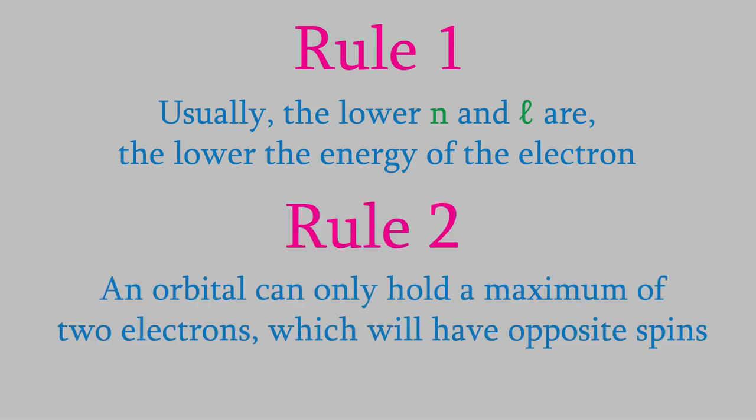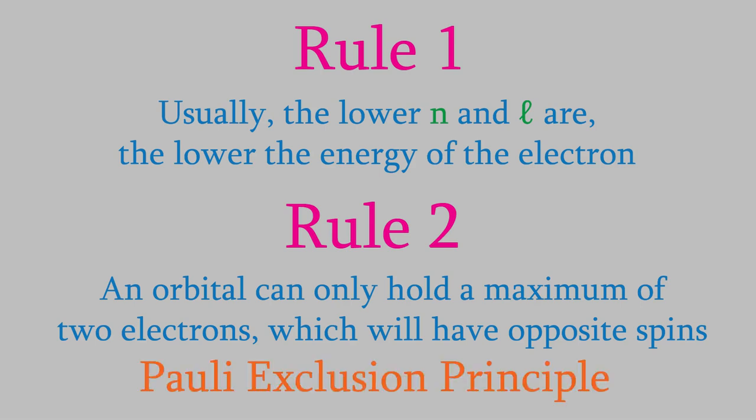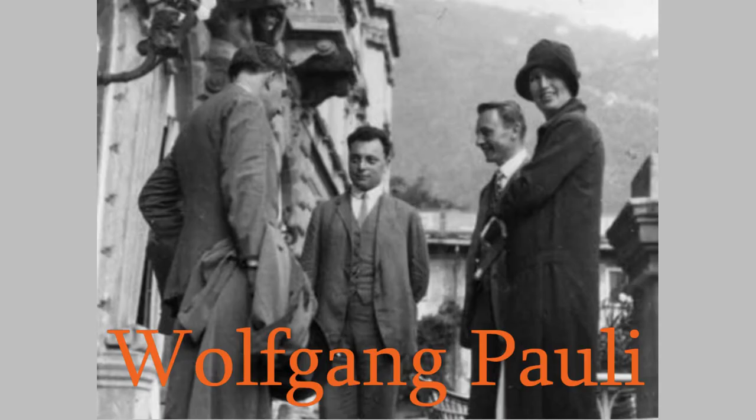Second, each orbital can only hold a maximum of two electrons, and these will have spins of plus and minus one-half. If there's only one electron in an orbital, it can have either spin. This idea that an orbital can only hold a maximum of two electrons with opposite spins is called the Pauli exclusion principle, and it's named after the Austrian physicist Wolfgang Pauli.